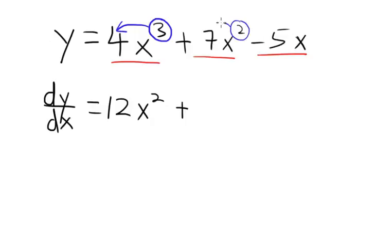Plus, now we bring the 2 to the front and multiply. 2 times 7 you get 14, and then x power 1 because 2 minus 1. Minus 5x means minus 5x power 1. Now we bring the 1 to the front and multiply it, and you get minus 5.